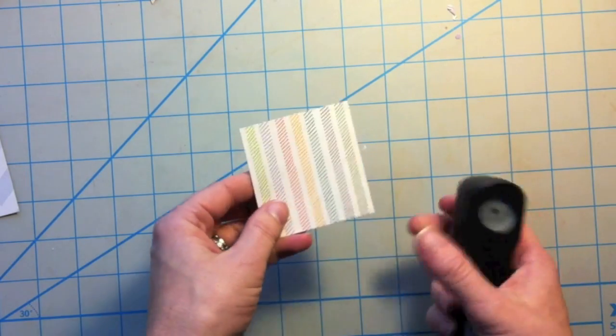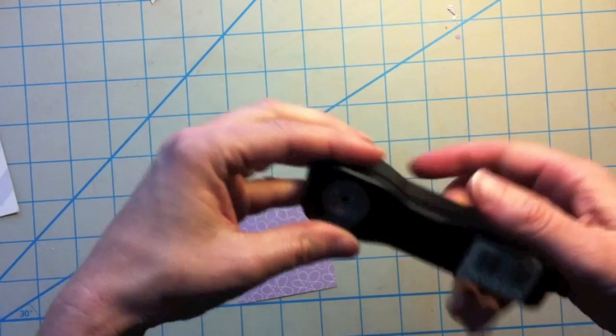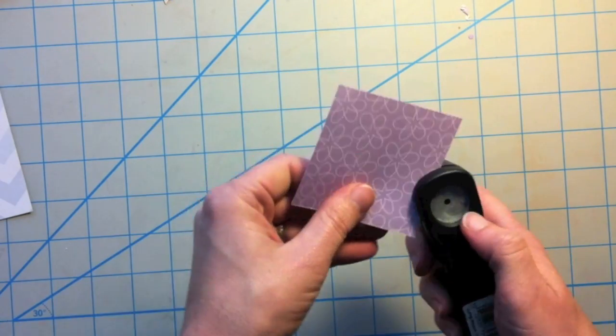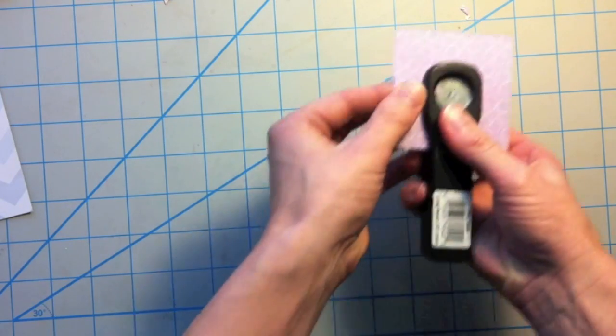So to start with I'm going to show you the hole punch method. This is not my go-to method because this does take me a little bit longer but I'm going to show you this method first. So I'm taking a one-eighth hole punch and I'm just eyeballing the center of that square and I'm punching a hole.